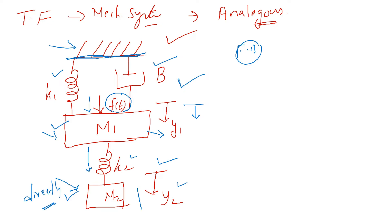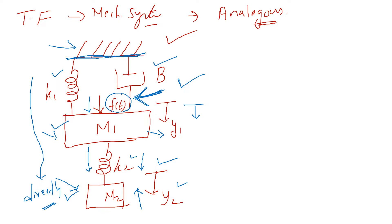We have one more mass M2 that is connected with M1 through a spring element K2, and this also experiences a displacement Y2. M2 does not have any external force acting on it directly - external force is through M1 only. The first step we have to do is to draw the free body diagram.